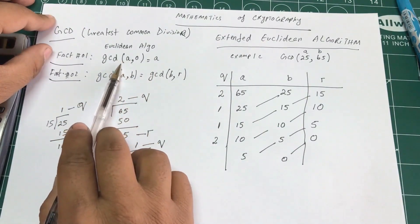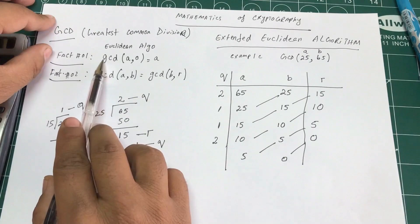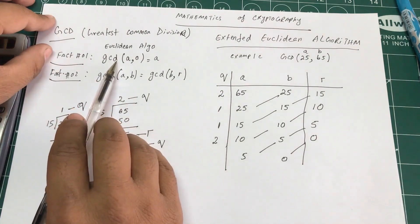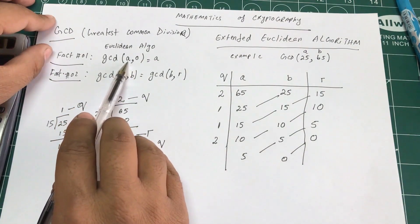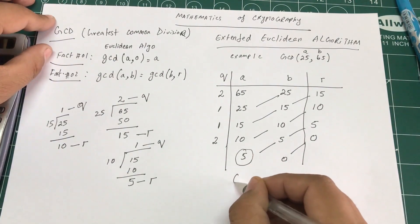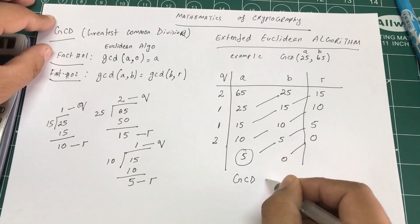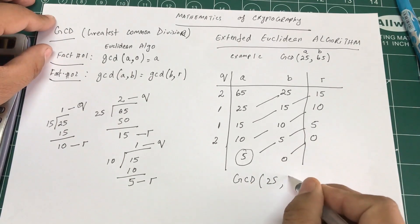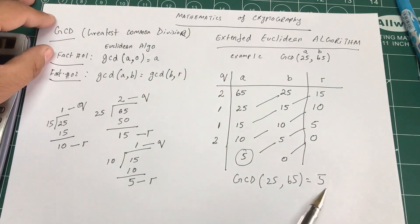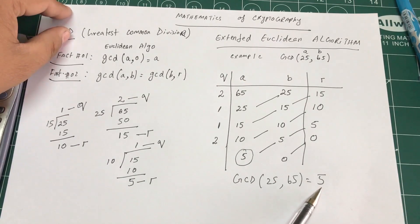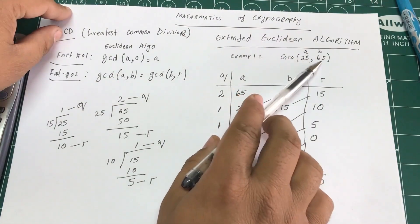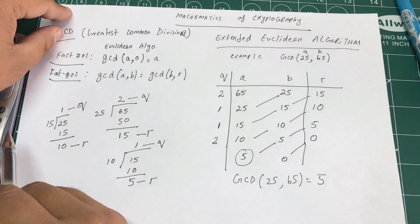We bring 5 down and 0 down. Now we've reached the condition where one value is 0, so by fact number 1, GCD(5, 0) = 5. Therefore, GCD(25, 65) = 5. This means 5 is the largest number that can divide both 25 and 65.